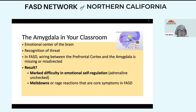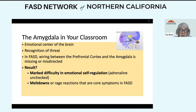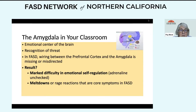The amygdala in your classroom: the amygdala is located in the limbic system and midbrain. It is the emotional center of the brain, involved in recognition of threat and fear response. In FASD, the wiring between the amygdala and the prefrontal cortex — which acts to down-regulate the amygdala's response — is damaged. The result is marked difficulty in emotional self-regulation with adrenaline unchecked, and those meltdowns and rage reactions that are core symptoms of fetal alcohol spectrum disorder. That's not behavior — that's how the brain functions.